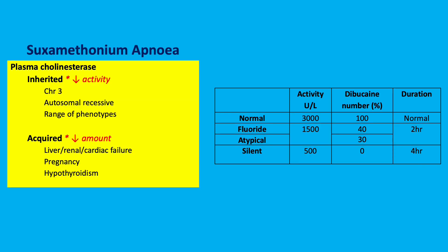Suxamethonium apnea is characterised by pathology in plasma cholinesterase, the enzyme responsible for metabolism of suxamethonium. As a result, suxamethonium persists for longer and patients experience prolonged block, requiring prolonged intubation. It can be inherited or acquired.